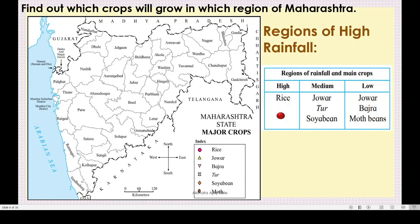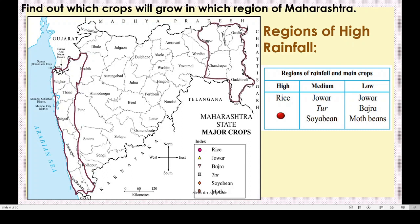Now we will show on the map where rice is grown. Rice grows in high rainfall areas, shown by the dark blue color. The Konkan region - Palghar, Thane, Raigarh, Ratnagiri, Sindhudur - receives high rainfall, so we grow rice there. Also the eastern region - Nagpur, Chandrapur, Gadchiroli, Gondiya - this area also receives high rainfall, so we grow rice in this high rainfall region.